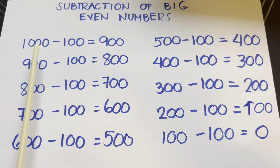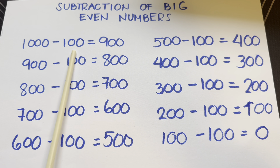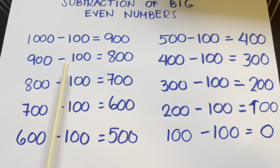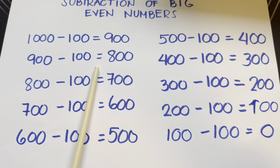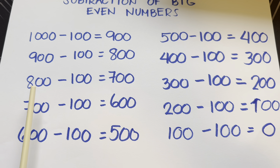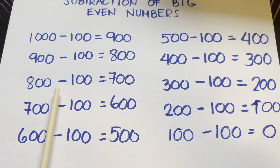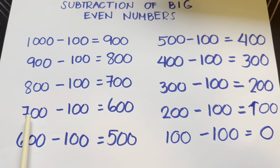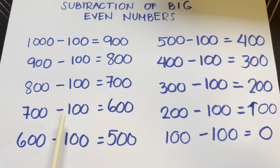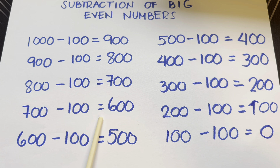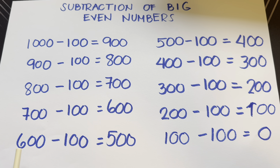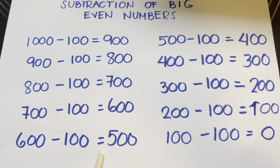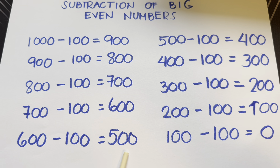1,000 minus 100 is equals to 900. 900 minus 100 is equals to 800. 800 minus 100 is equals to 700. 700 minus 100 is equals to 600. 600 minus 100 is equals to 500.